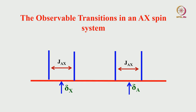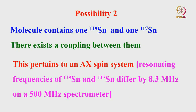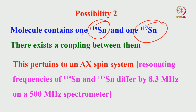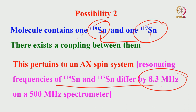In an AX spin system — which we have discussed before — you get four peaks: two for A and two for X, i.e., two doublets. The separation of each doublet gives the J coupling between A and X. Now consider a molecule where one tin is Sn-119 and the other is Sn-117: both are spin-half, both are equally abundant (~8%), so there can be coupling between them. Their resonance frequencies differ by 8.3 MHz, making them a weakly coupled AX spin system.